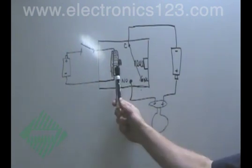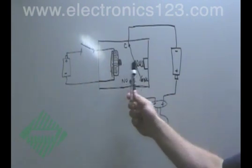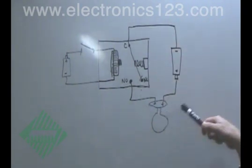One circuit controls the electromagnetic switch. The other circuit supplies voltage to whatever it is you're trying to power through the relay.